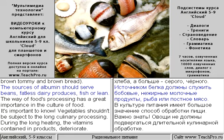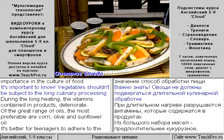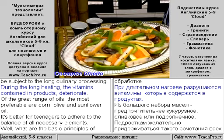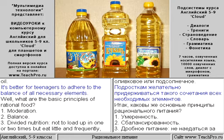The sources of albumin should be beans, fatless dairy products, fish, or lean meat. The way food is processed has great importance in the culture of food. Vegetables shouldn't be subject to long culinary processing, as during long heating the vitamins contained in products deteriorate. Of the great range of oils, the most preferable are corn, olive, and sunflower oil.